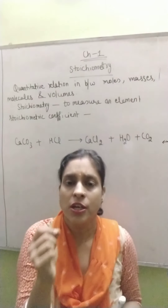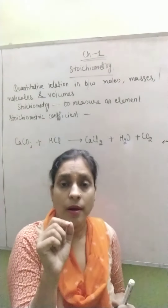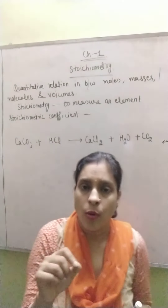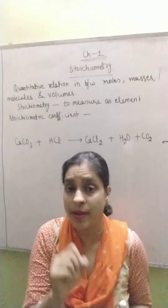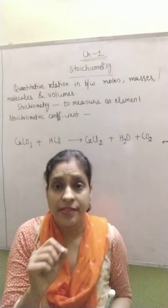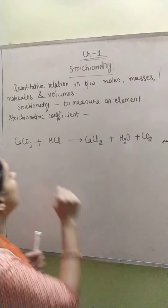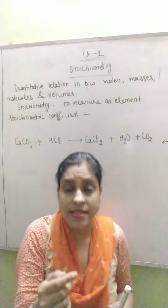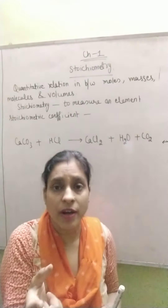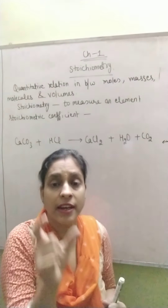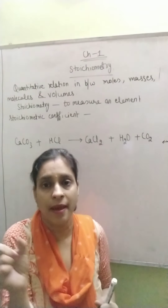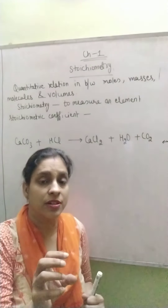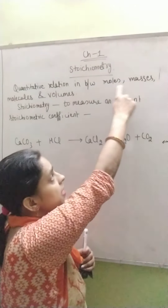If we are talking about the word stoichiometry, it basically means to measure an element. Why is there a need to measure an element? Obviously, when that element or compound participates in a chemical reaction, then quantitatively it tells us the quantitative relationship between the moles, masses, volume, and molecular mass of the different compounds or elements present in a chemical reaction. Basically, the balancing of a chemical reaction tells us about the relationship between these terms.